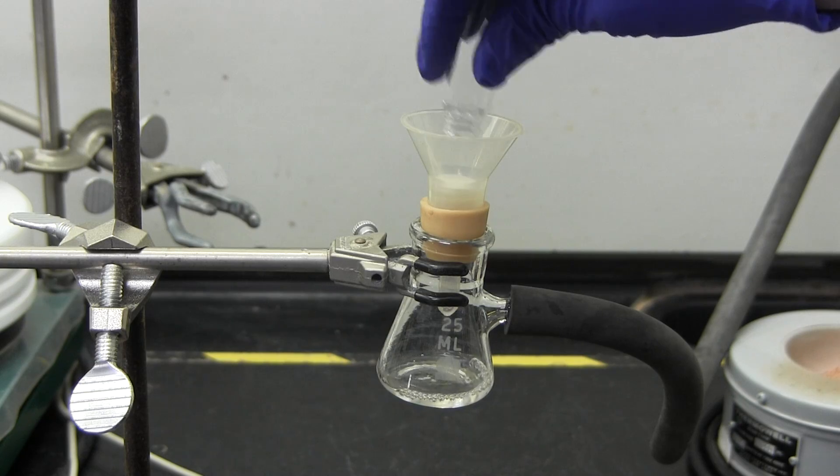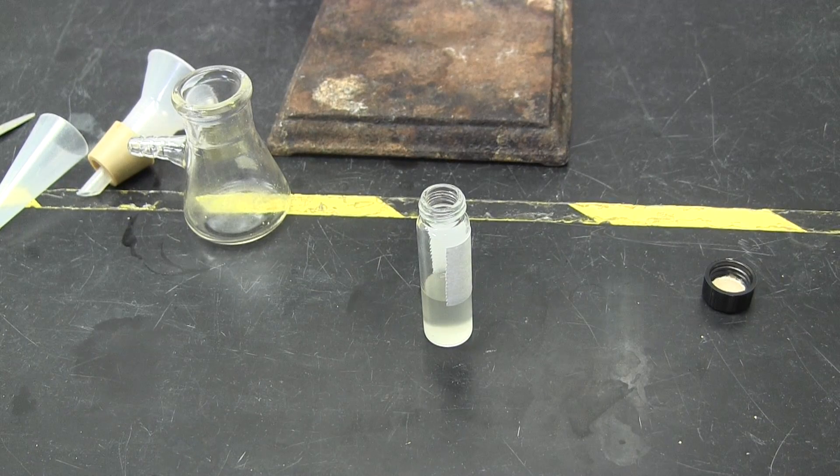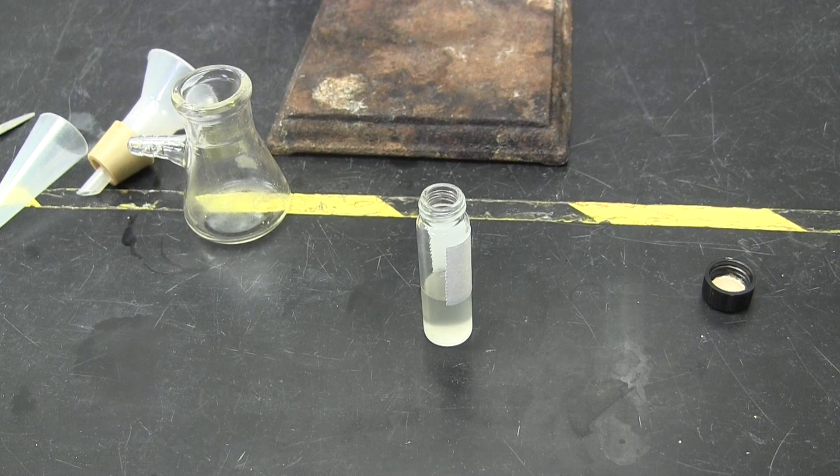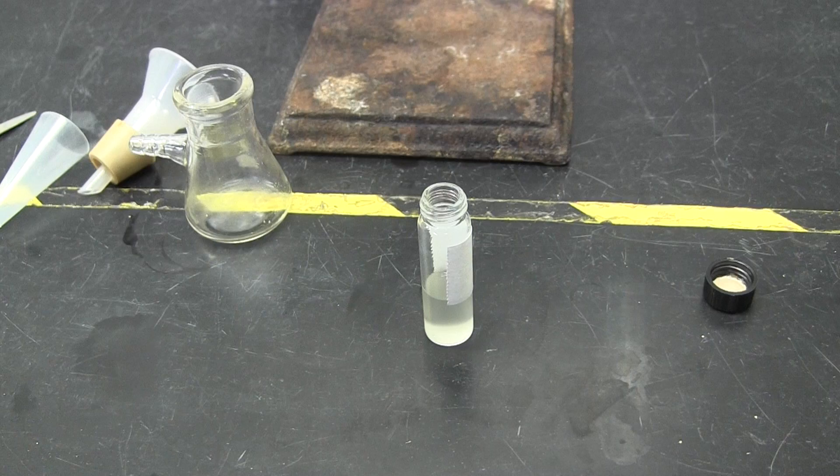First you will filter off the enzyme. Label the vial with your name, the date, lab, and lab period. Cap the vial and tape it inside your drawer.